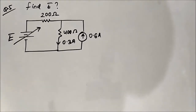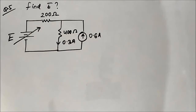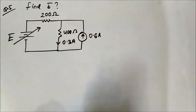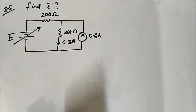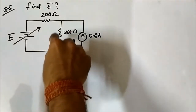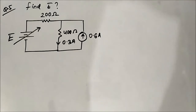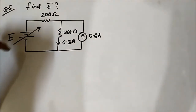Hello friends, welcome to Engineering Tutorial. So far we have discussed around four questions on superposition theorem, so this is the fifth question. The circuit diagram is very simple and straightforward. It consists of two sources: a variable voltage source E and a current source of 0.6 milliampere, both independent DC sources. We have two resistors, 200 ohm and 400 ohm, and the current flowing through the 400 ohm resistor is 0.3 ampere.